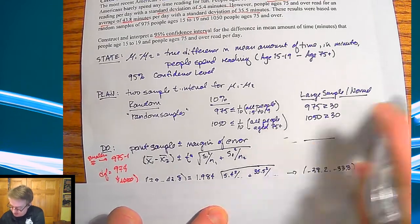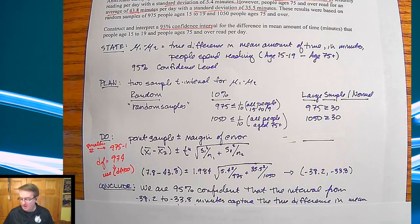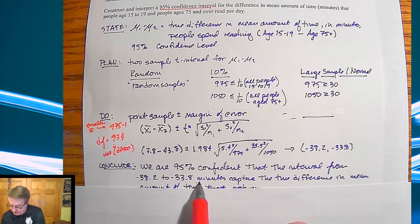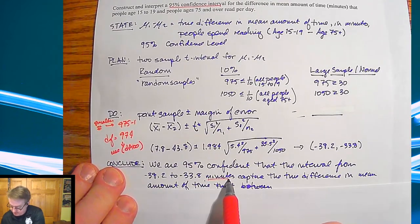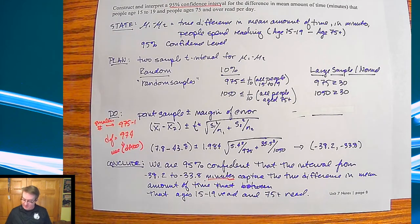For your conclusion: we are 95% confident that the interval from -38.2 to -33.8 minutes - notice there is context here - captures the true difference in mean amount of time that ages 15 through 19 read and 75+ read.